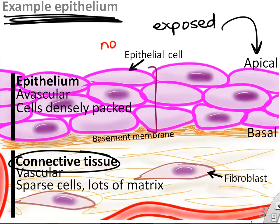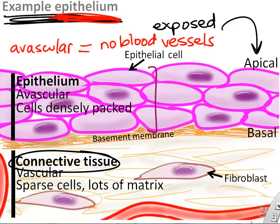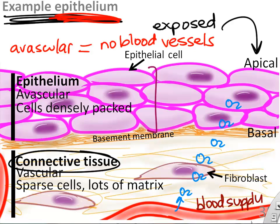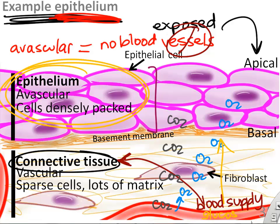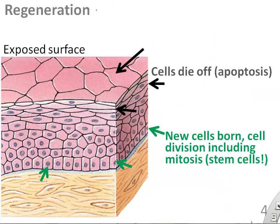Another feature of all epithelia is that they don't have blood vessels — because they're so tightly packed with cells there's no room for blood vessels. They get their blood supply from the connective tissue, which does have blood vessels. The connective tissue underneath supplies oxygen, glucose, and removes waste products. So epithelia are avascular.